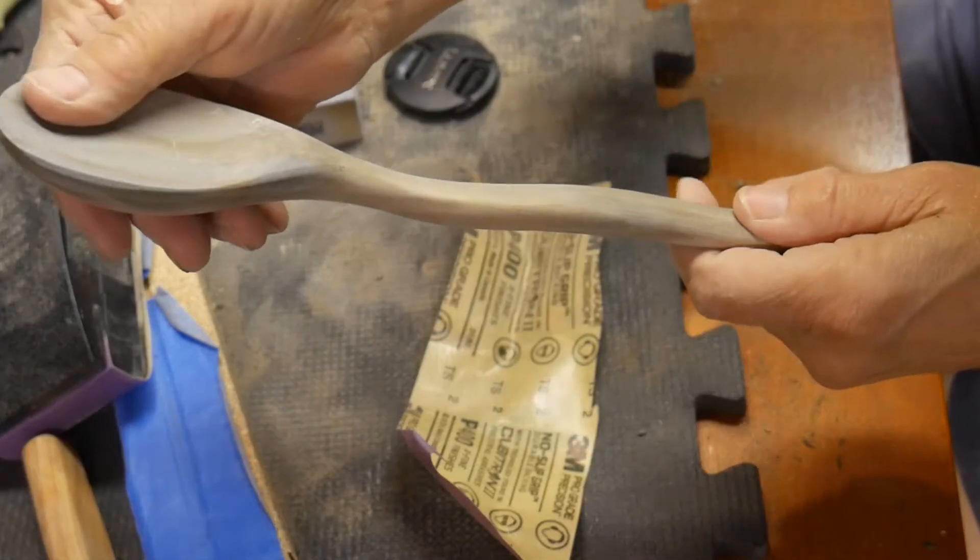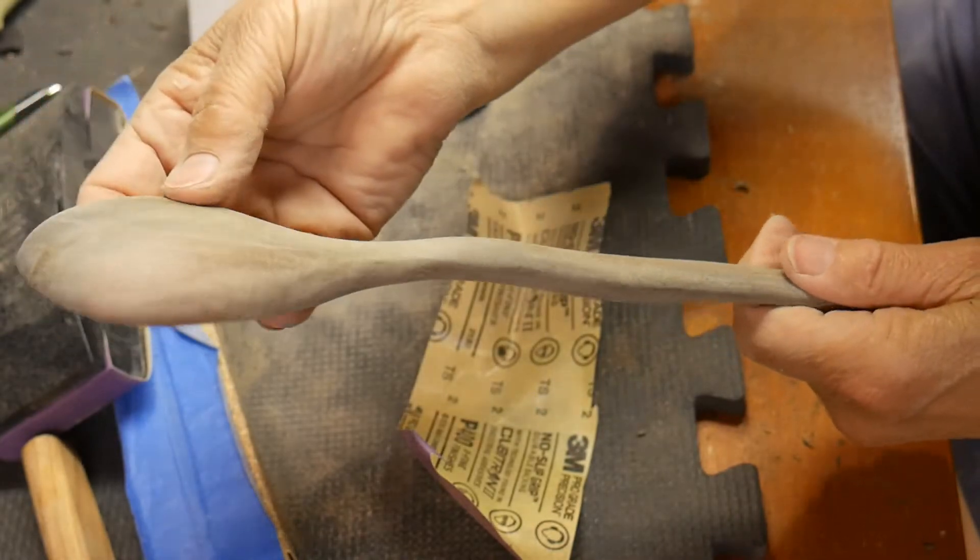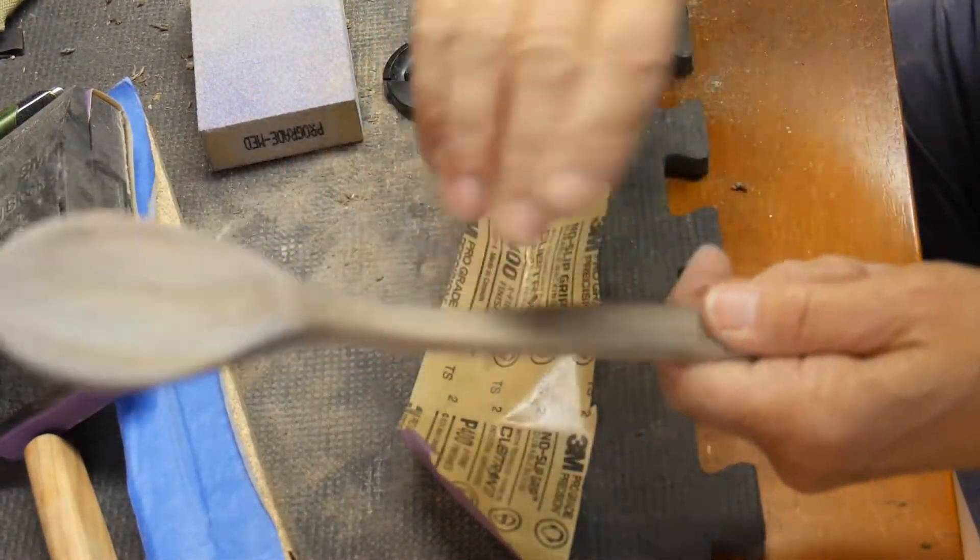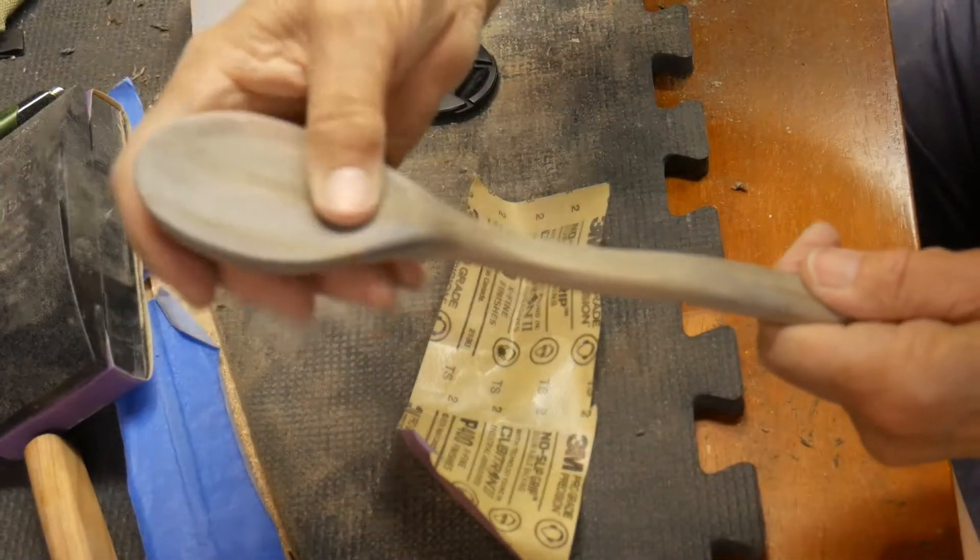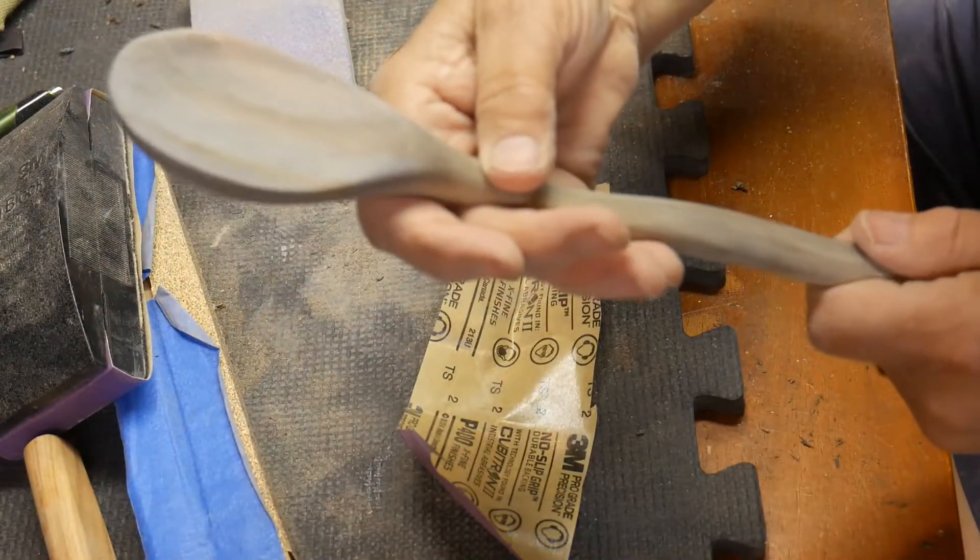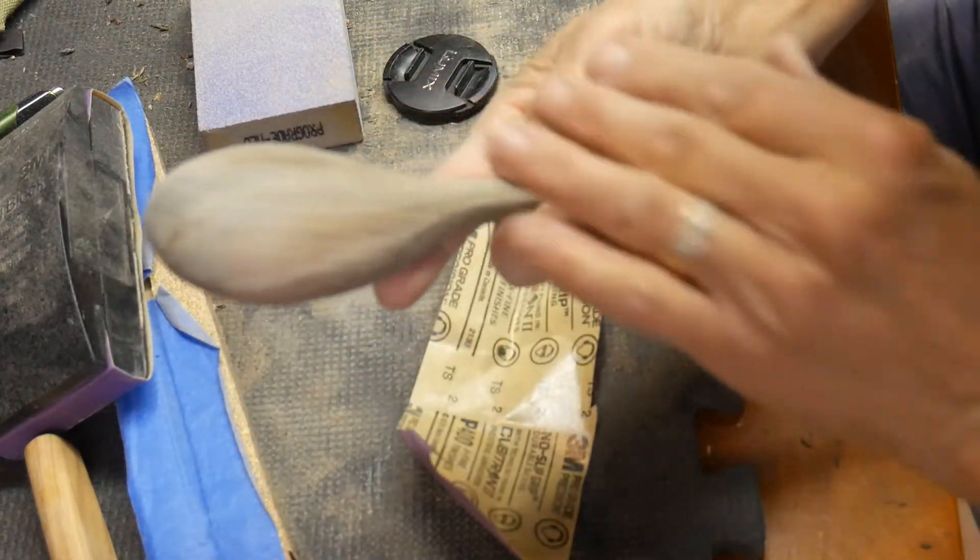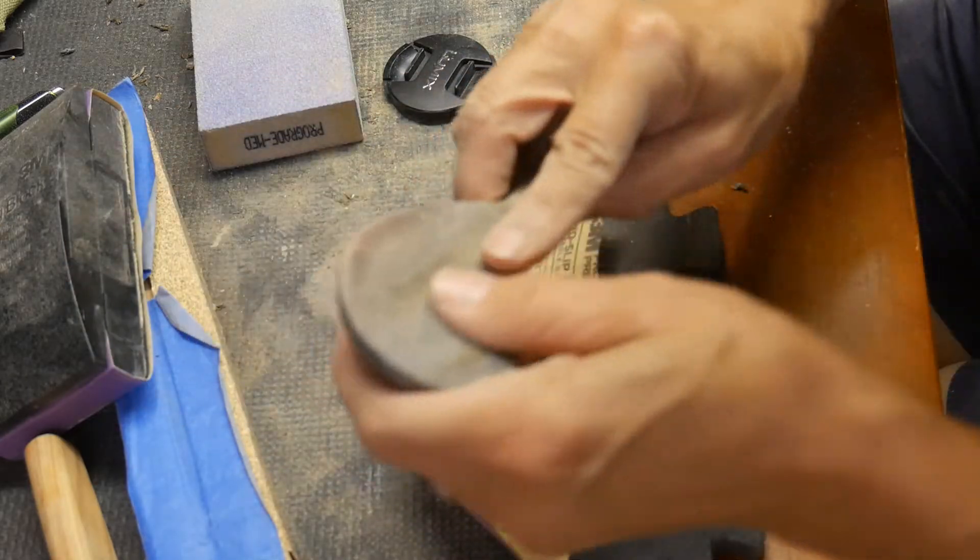I have gone all the way down to 400 grit. Now what I need to do is wipe off all the excess sawdust and wet it down so that it will raise the grain and I can do my last sanding before oiling.